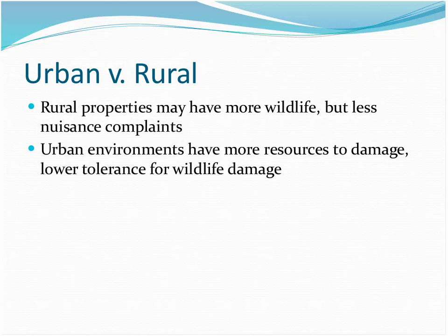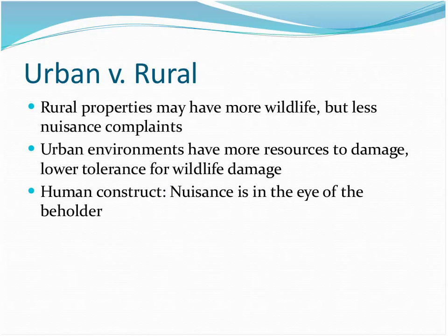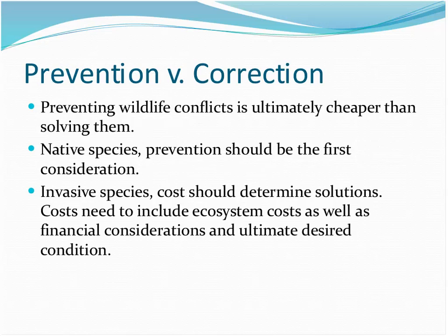The idea of nuisance is in the eye of the beholder, and that makes a difference when we talk about solutions. Preventing wildlife conflicts is ultimately cheaper than solving them one at a time. Prevention is necessary when talking about large-scale damage, but may not be needed for a single animal. For native species, we should consider prevention first — what can I do to make this problem go away, not make the animal go away? For invasive species, you need to consider all costs, including ecosystem costs.